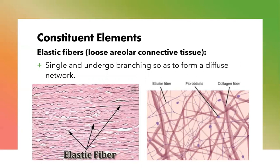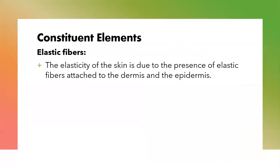The elastic fibers, which you find in the loose areolar connective tissue, form a single arrangement and undergo branching so as to form a diffuse network, as you can see in the diagram. The elasticity of the skin is due to the presence of elastic fibers attached to the dermis and epidermis of the skin, making the skin elastic — if you stretch it, it can recoil back to its original shape. As people grow older, they lose the elasticity of the skin, so it takes longer for the skin to return to its normal position compared to a younger individual.